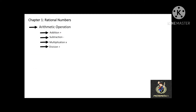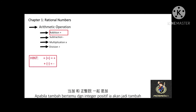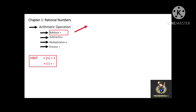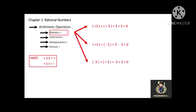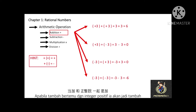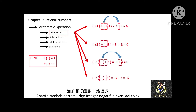Before we go to the addition example, let's look at the hint. When plus meets a positive value, it will become plus. And when plus meets a negative value, it will become minus. Let's look at the examples: positive 3 plus positive 3 equals 3 plus 3. Positive 3 plus negative 3 equals 3 minus 3. Negative 3 plus positive 3 equals negative 3 plus 3. And negative 3 plus negative 3 equals negative 3 minus 3.